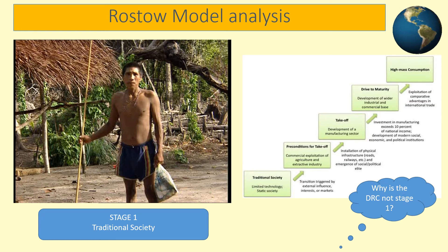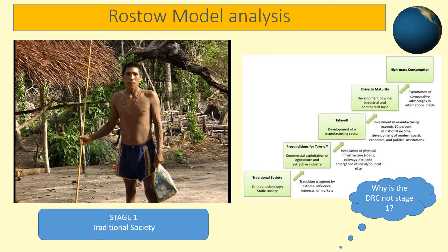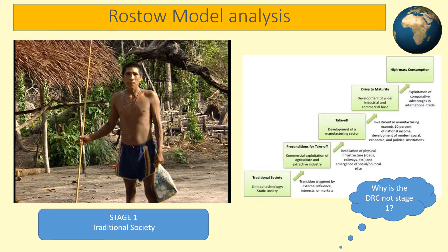Stage one — traditional society — is a very simplistic place. Everything is very basic, with the economy based upon religion and subsistence farming, which means they collect natural resources around them to survive. Their lives revolve around the seasons and the growing of food. There are only a few places in the world where these occur, such as in the Amazon rainforest or Penang in Borneo. Although the DRC is not as advanced as the UK, it is not as basic as a traditional society in most of its country, as people in the DRC live in large urban areas such as Kinshasa in regular homes and don't all just work on the land.